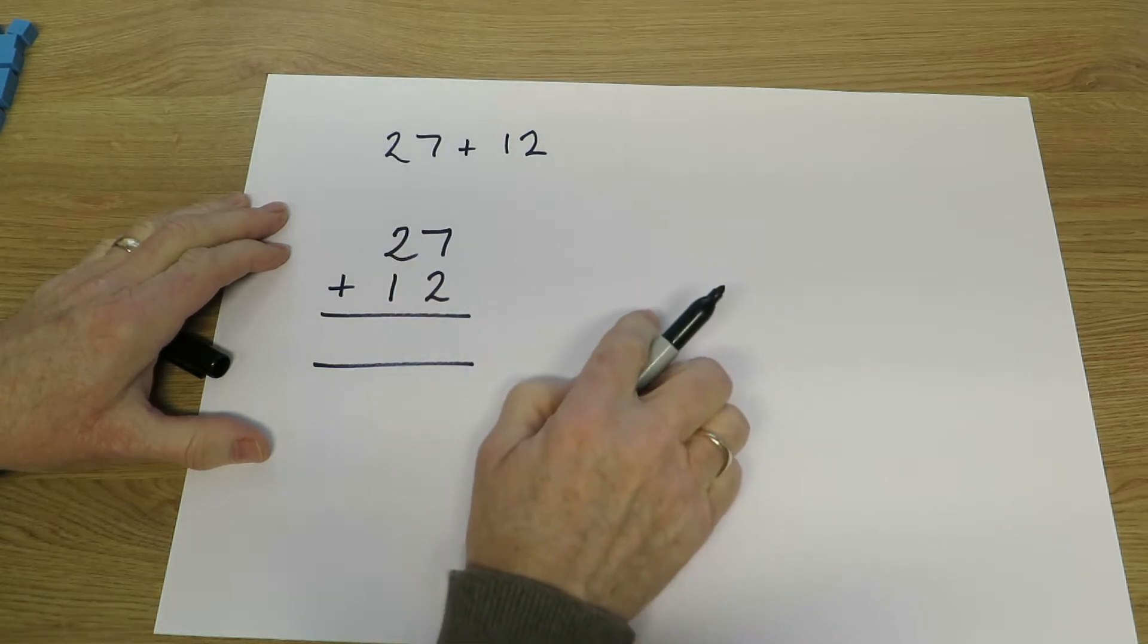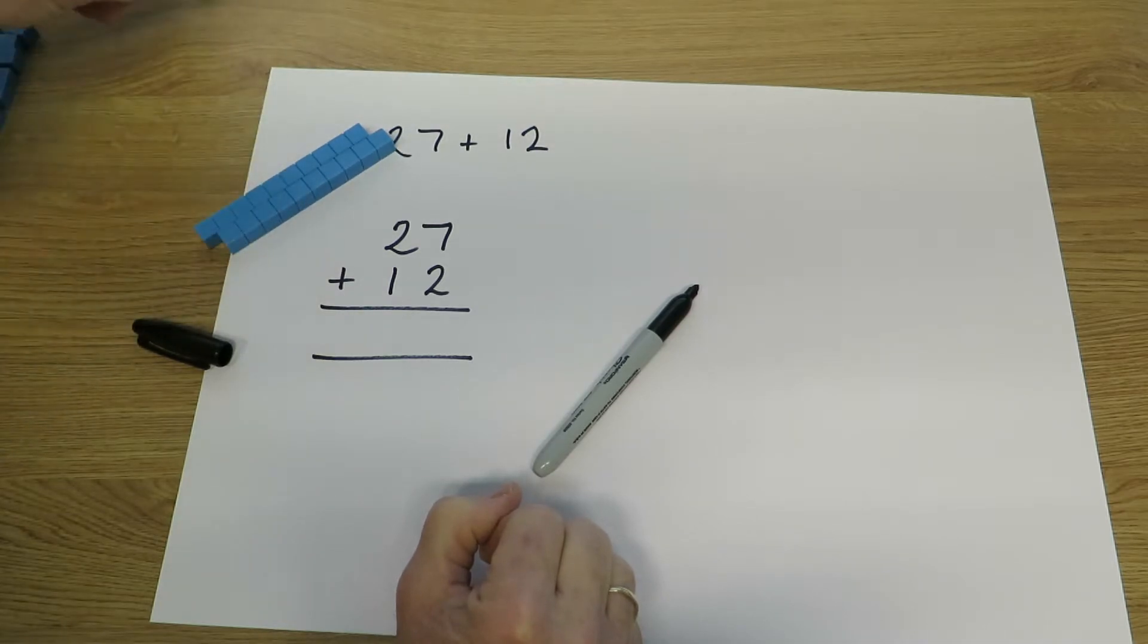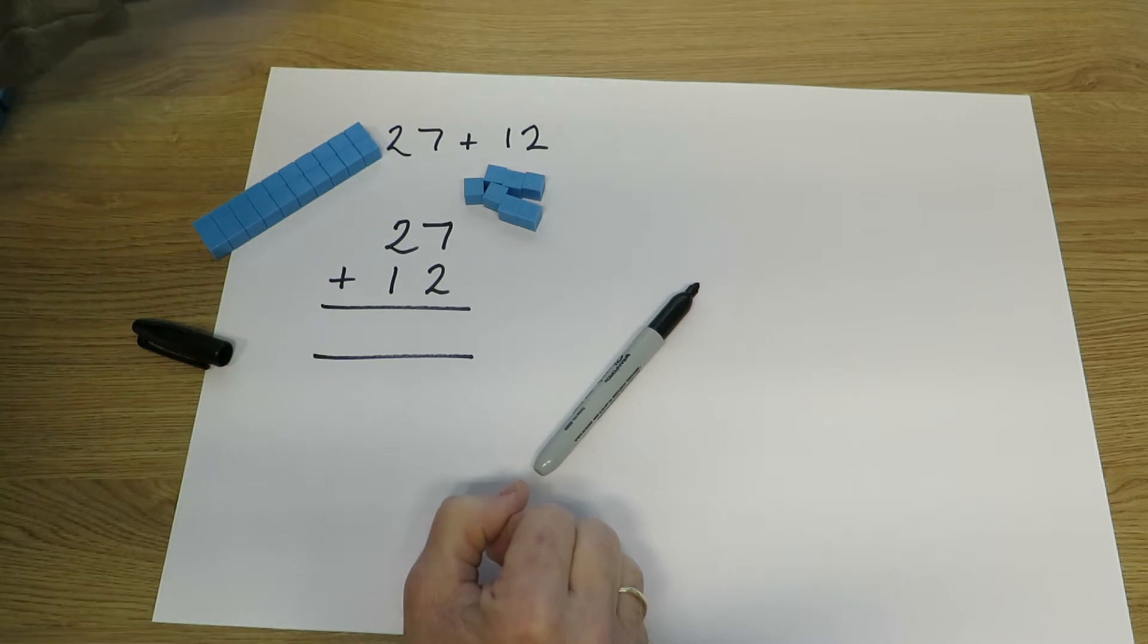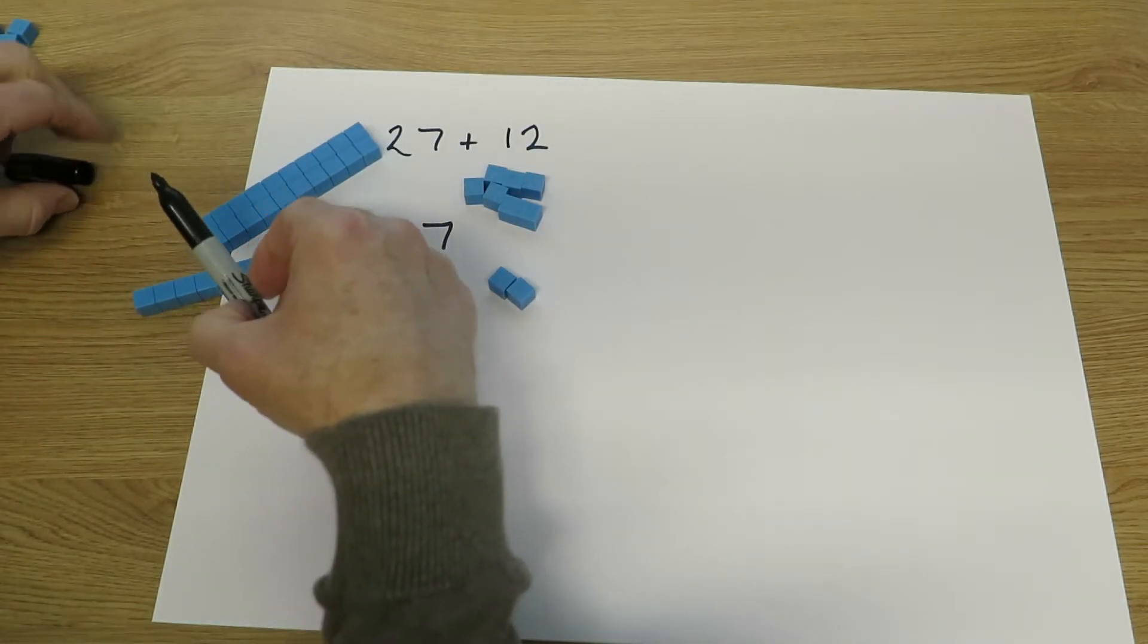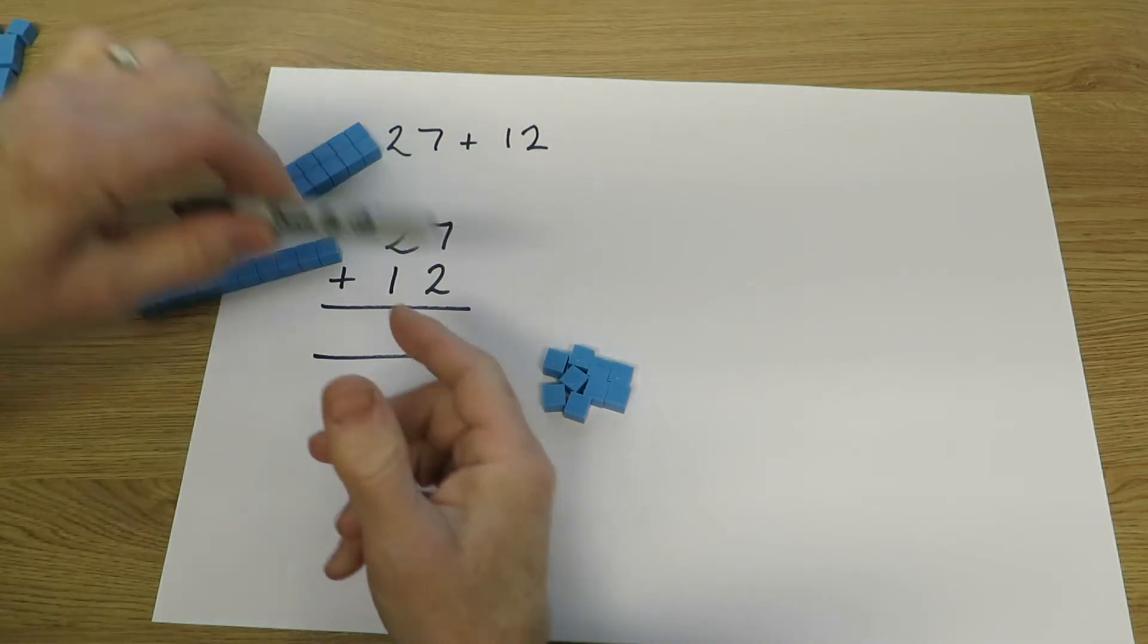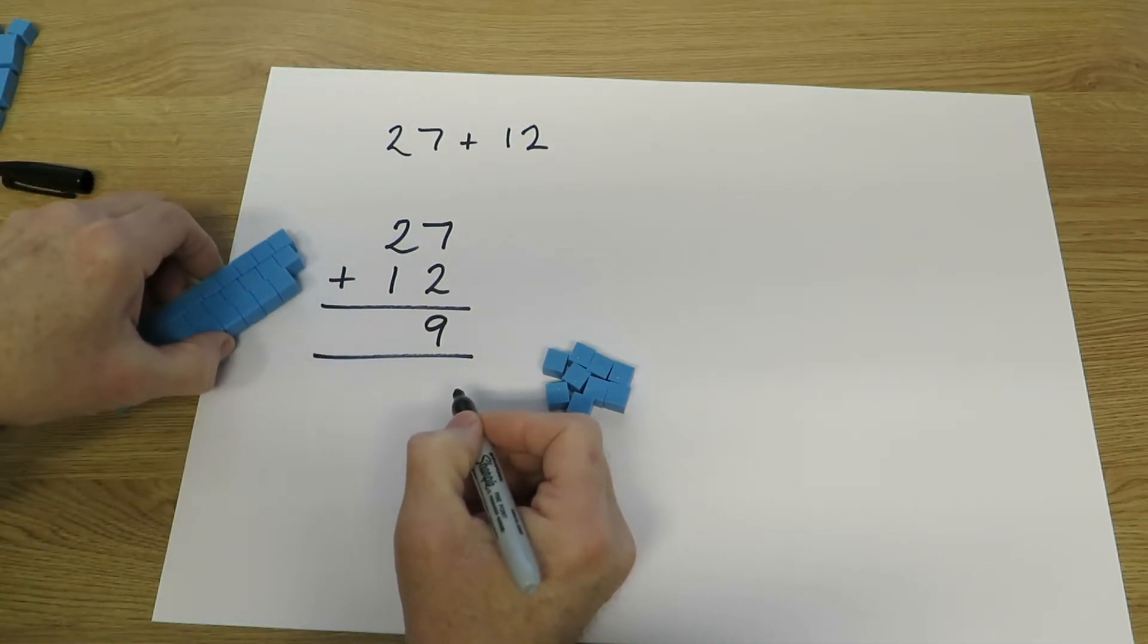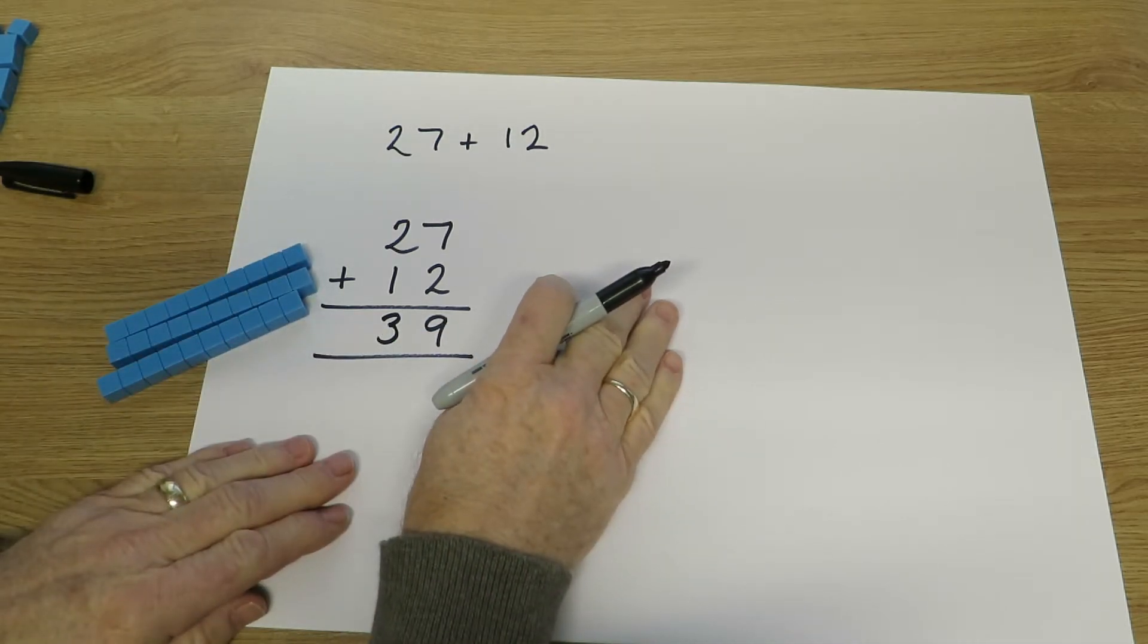Those are the units, those are the tens, and the best way to illustrate that is with base 10 equipment. So 20 and 27, they must check they've got the right numbers, and 12. And we combine the units first: 7 add 2, so 7 add 2 they will know already that that's 9, and 2 tens add 1 ten that gives us 3 tens. So the final answer is 39.